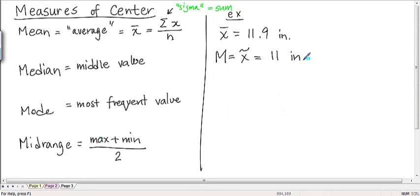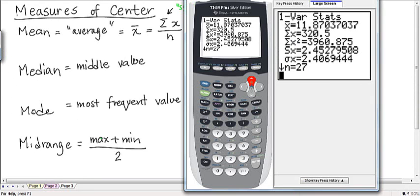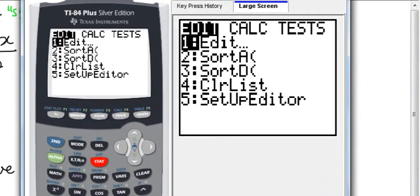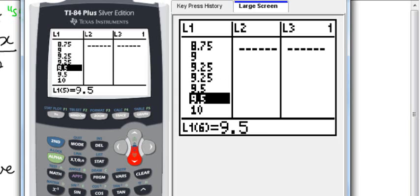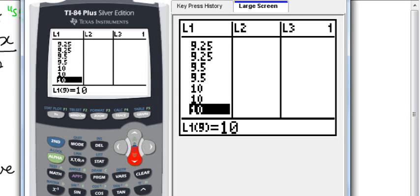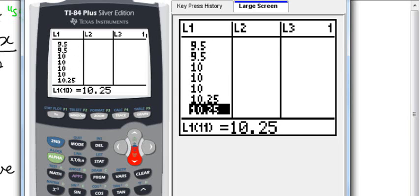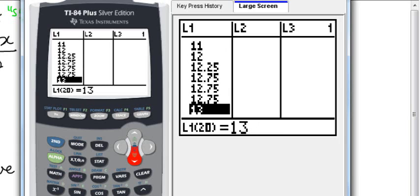The mode and the midrange, unfortunately, you have to calculate by hand. You're just going to have to go through, look at your data, and see which value occurs the most. And if you sort the data, it helps you do that. So we have 10 occurring three times, and we have 12.75 occurring three times, and 15 occurring three times.